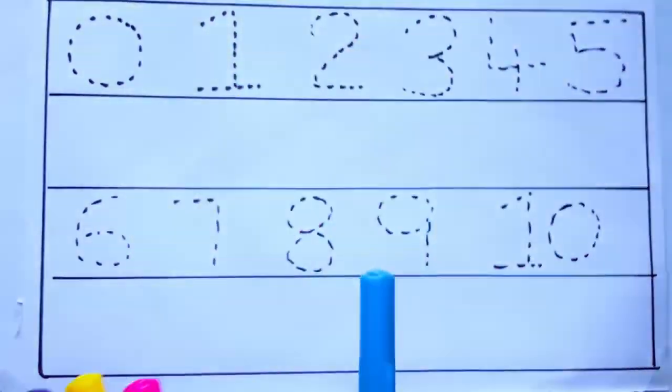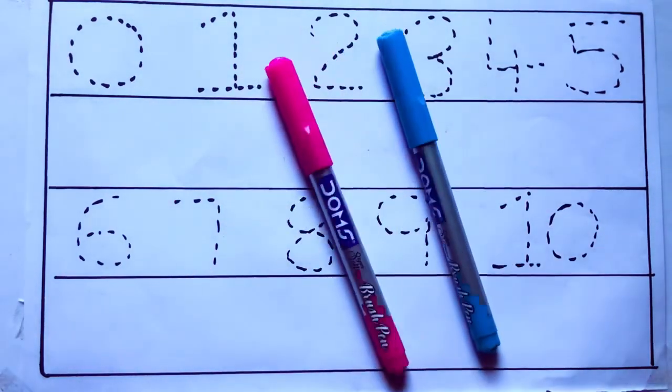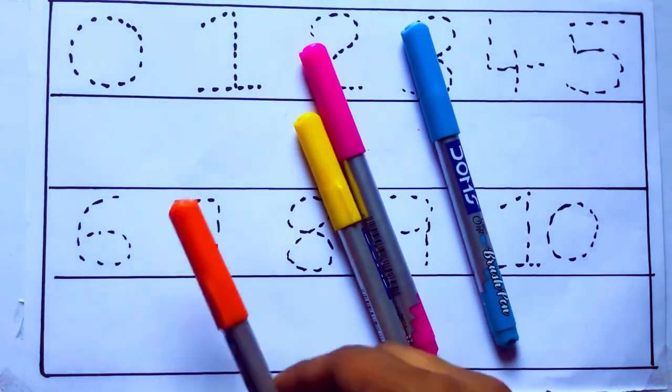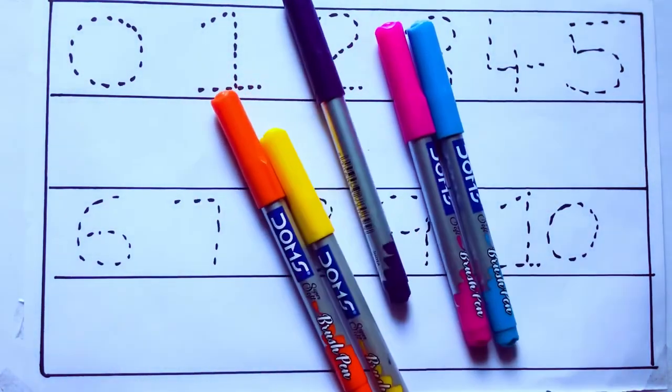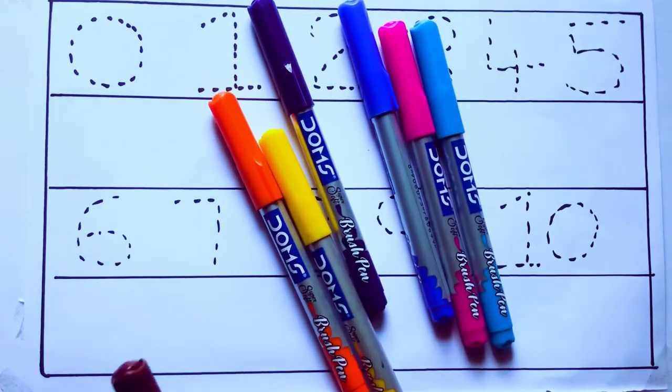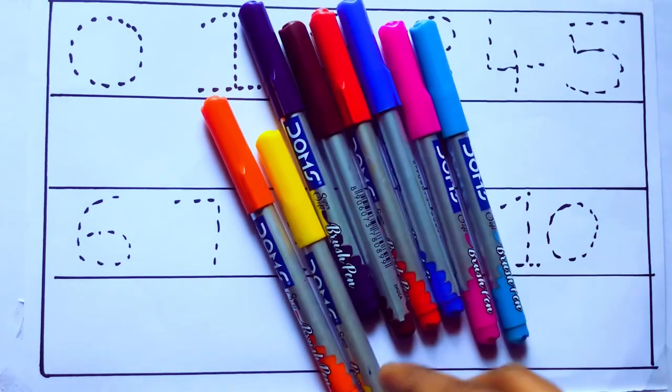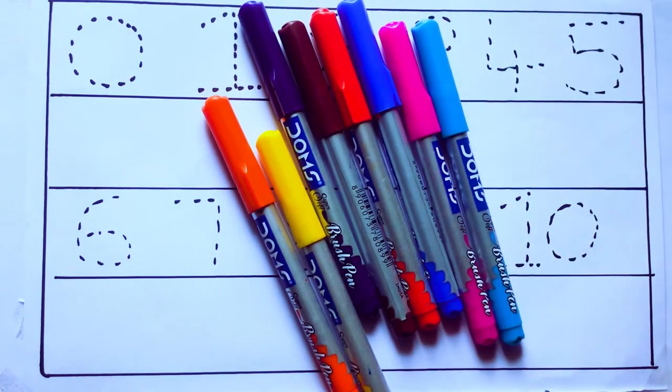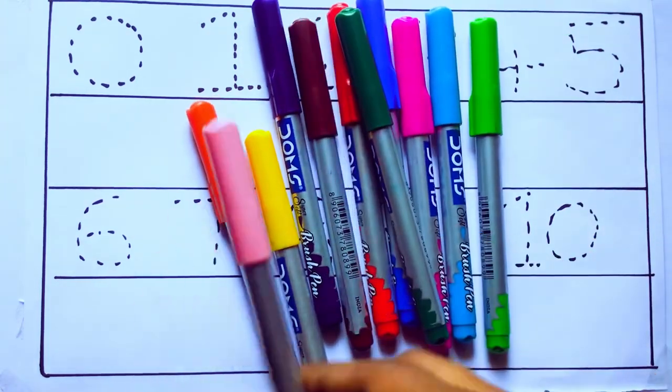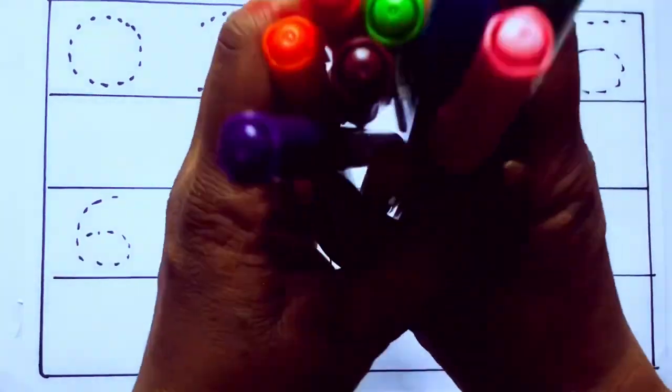Let's learn the names. Sky blue color, pink color, yellow color, orange color, violet color, blue color, brown color, red color, green color, and pink color.